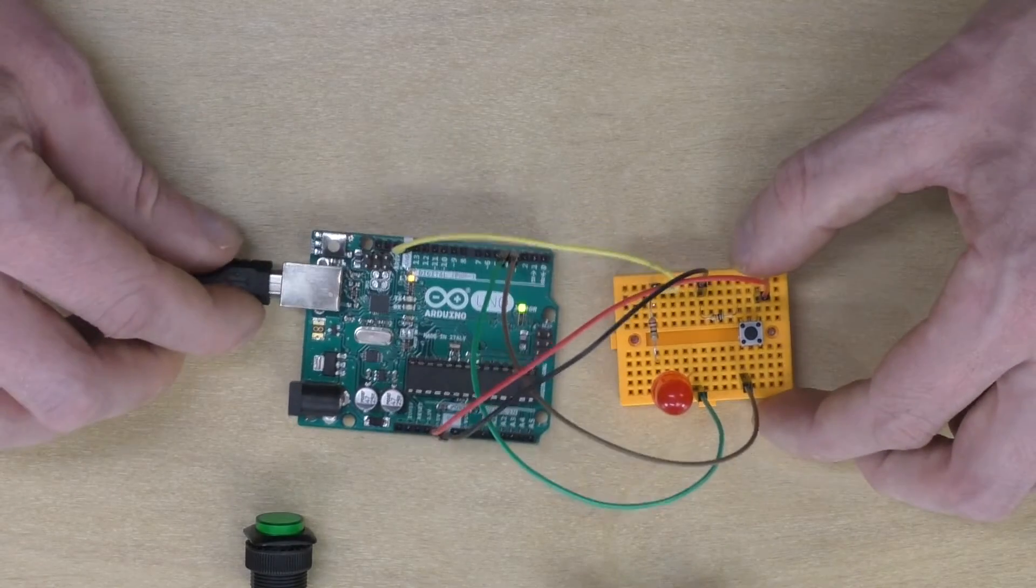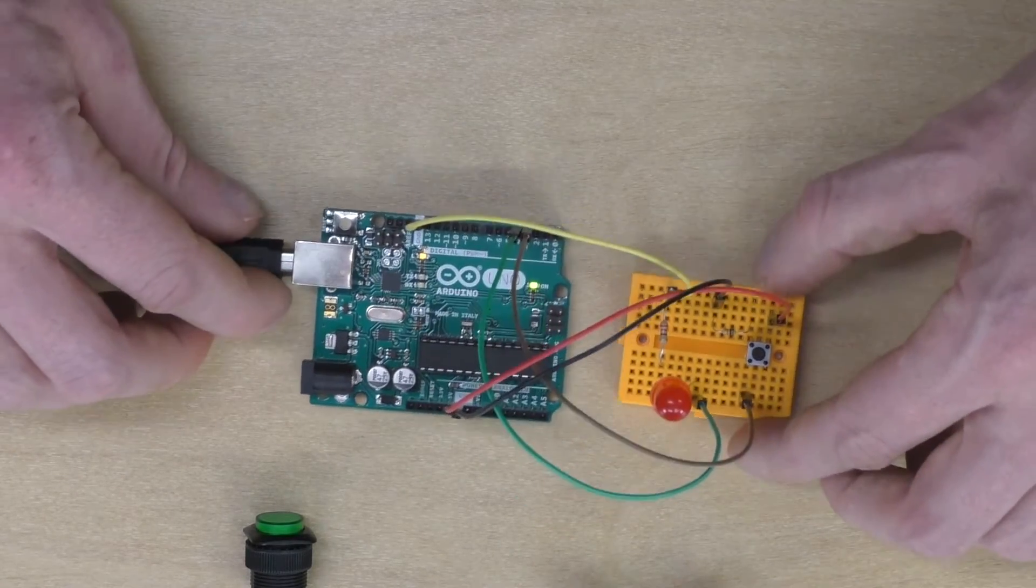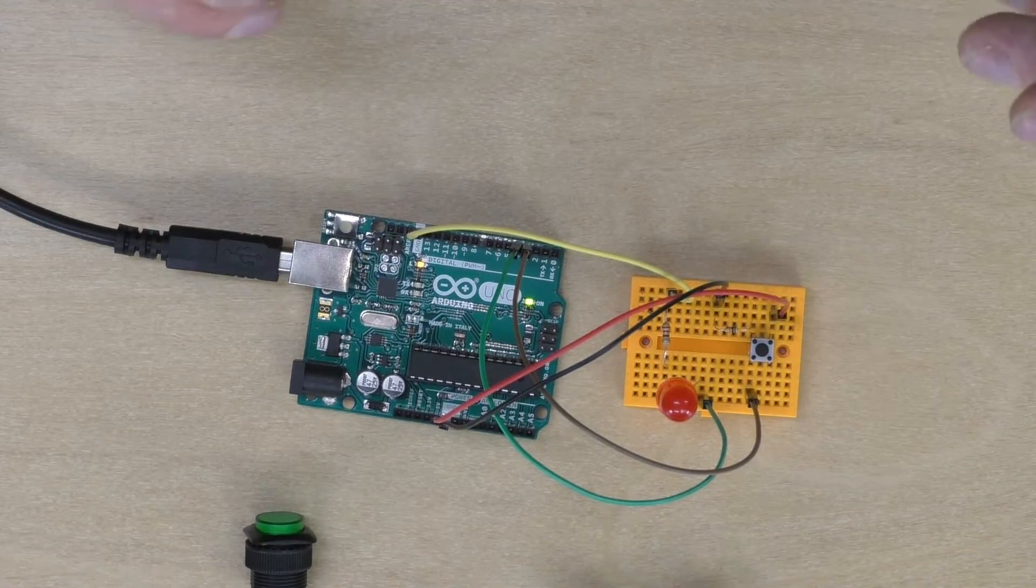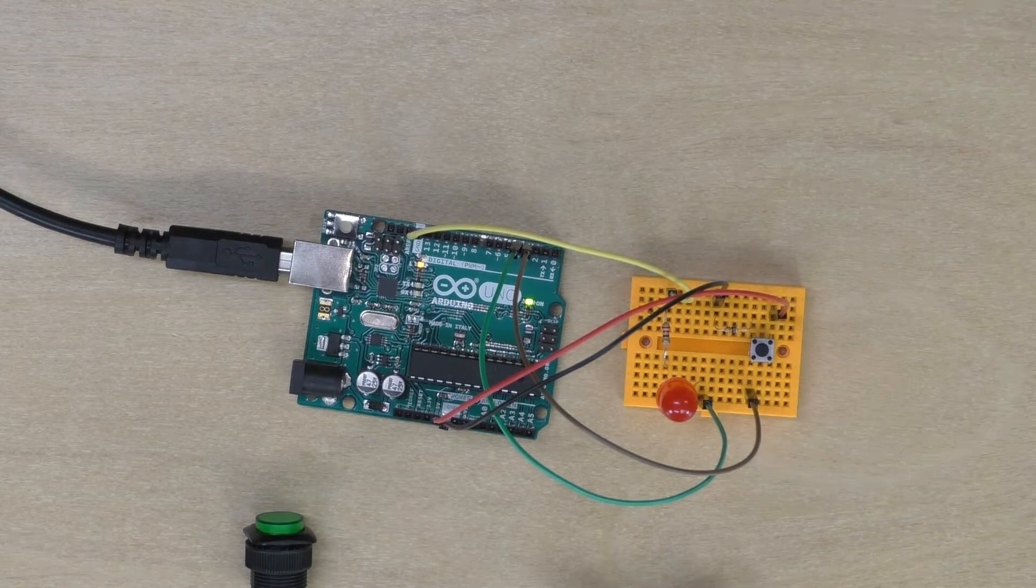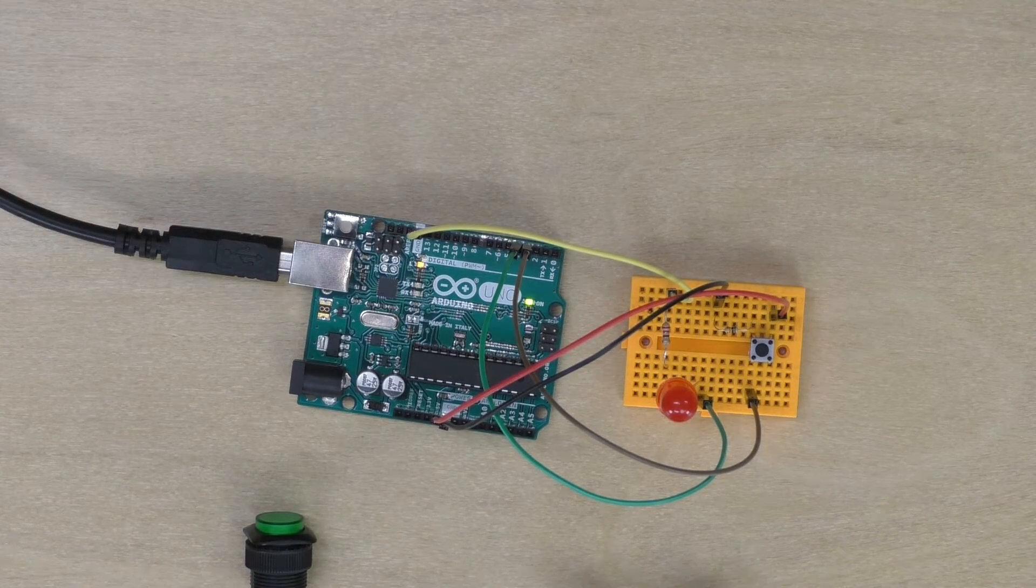Let's move those switches out of the way. Now this is all a pretty basic setup, and the idea of it is that when we push that button the LED will turn on, and when we push the button again the LED will turn off.